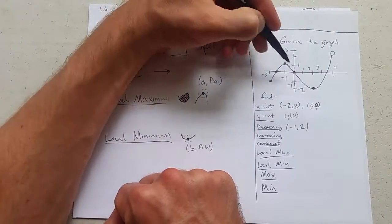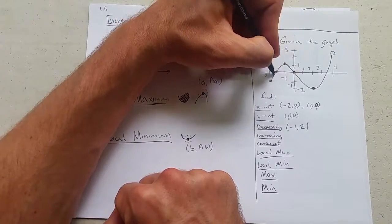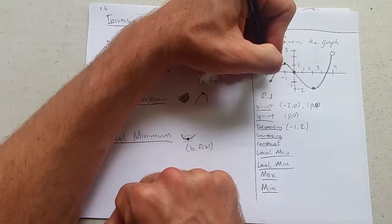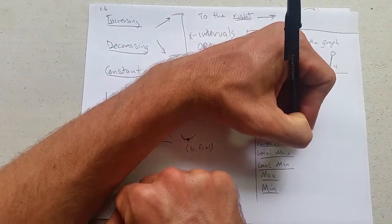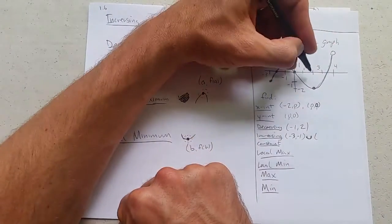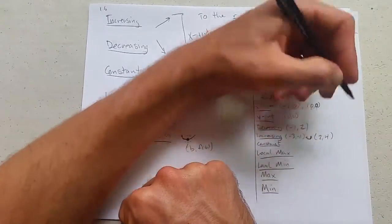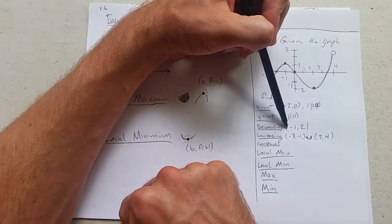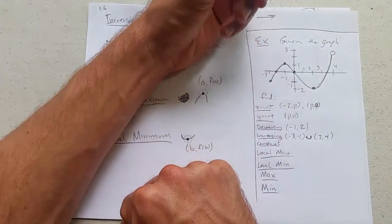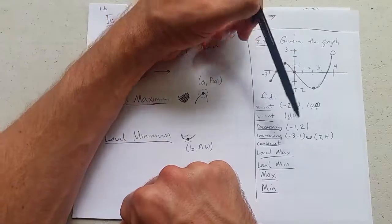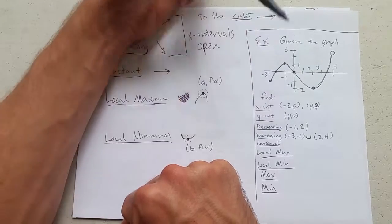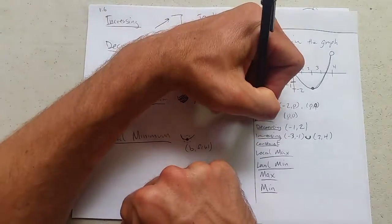Where's the function increasing? So to the right, we're going up here. So here's an increasing interval. And here's another increasing interval. So we'll start out negative 3 to negative 1. And we're going to put the u for union in between. And we're going to go from 2 to 4. You want to be careful with your notation. Notation for intervals looks just like points. And the only way to know which one you're talking about at the time is in context. I know y-intercept should be at a point.